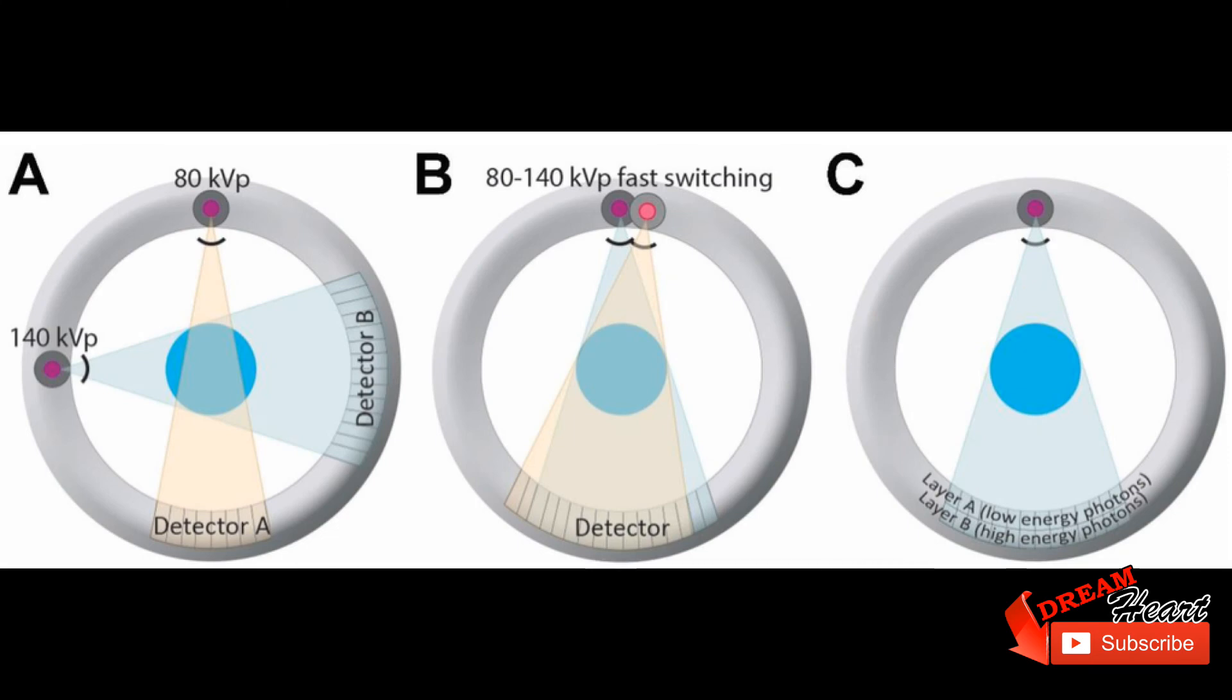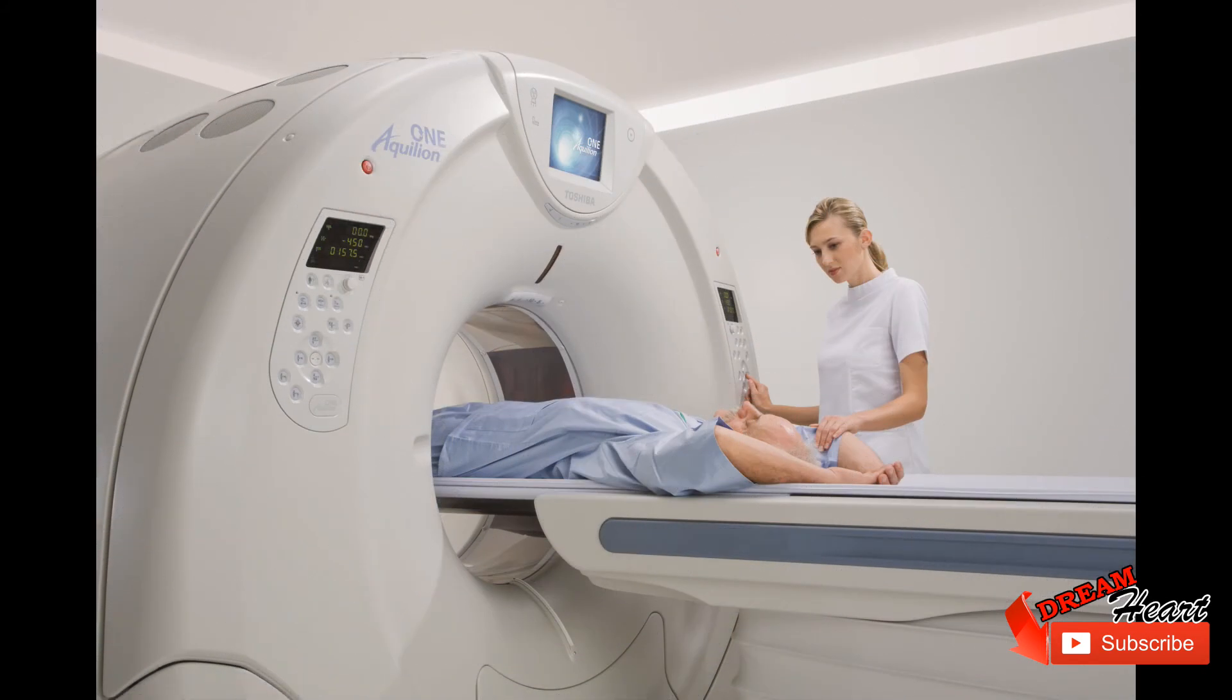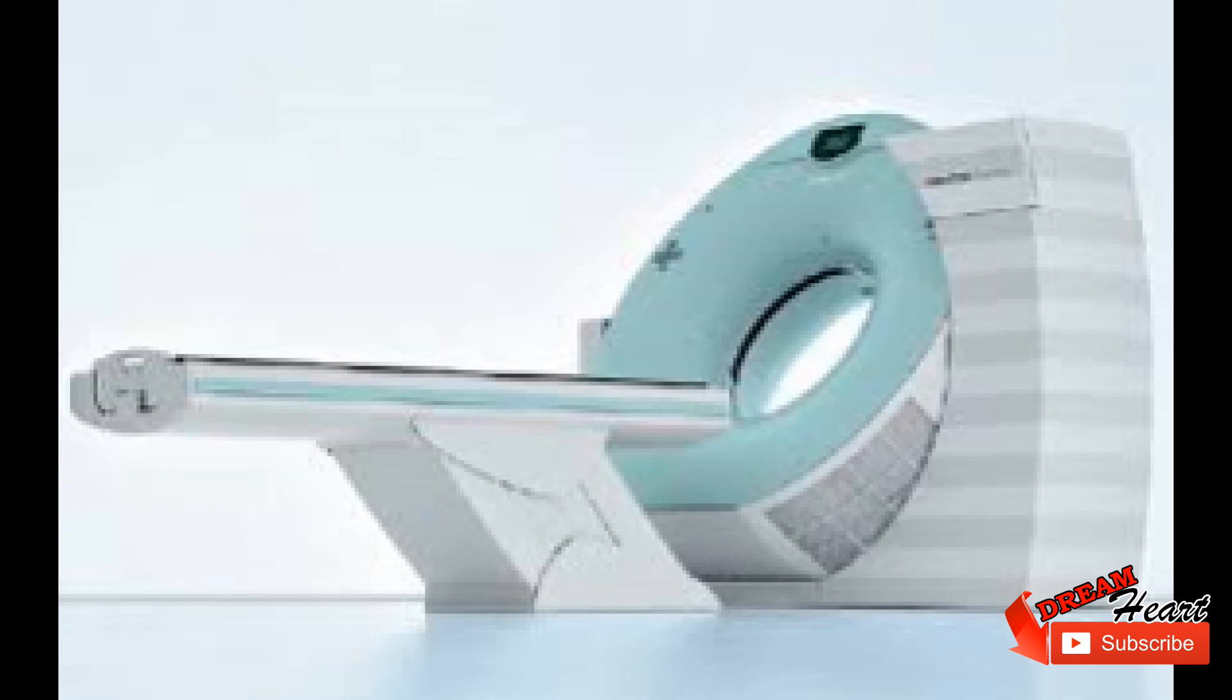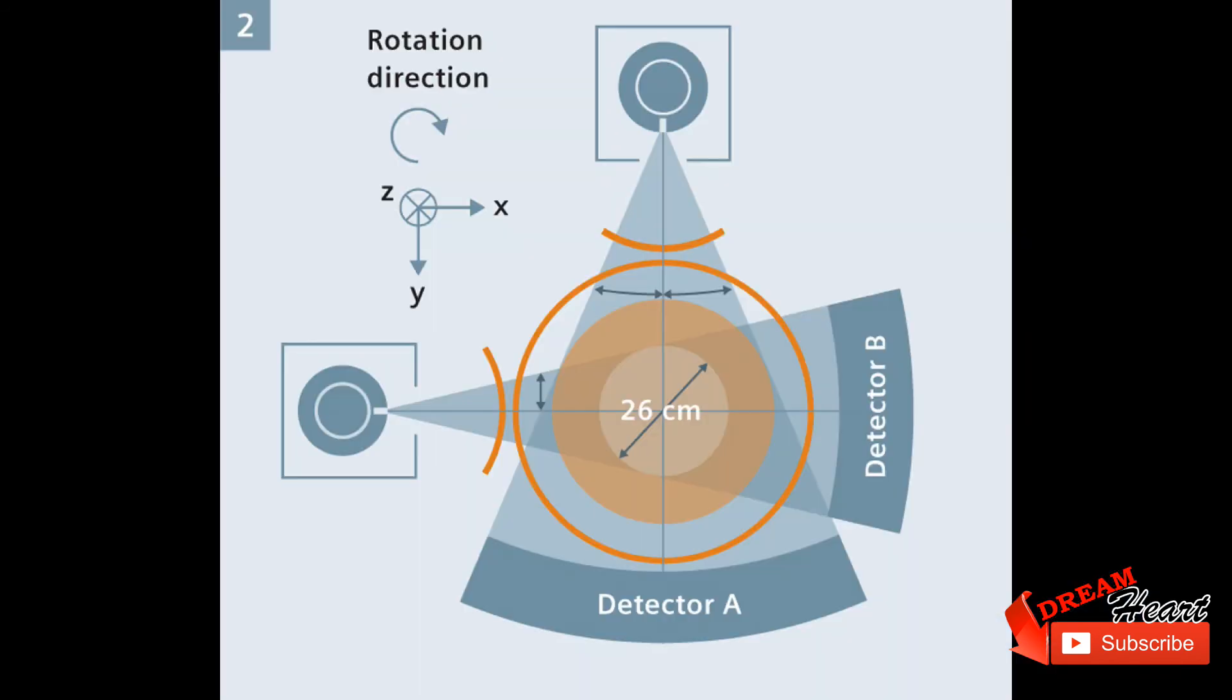The major benefit of multi-slice CT is the increased speed of volume coverage. This allows large volumes to be scanned at the optimal time. The ability of multi-slice scanners to achieve isotropic resolution even on routine studies means that maximum image quality is not restricted to images in the axial plane, and studies can be freely viewed in any desired plane.